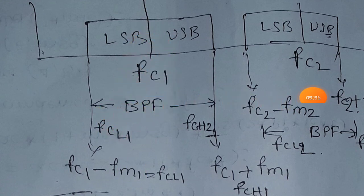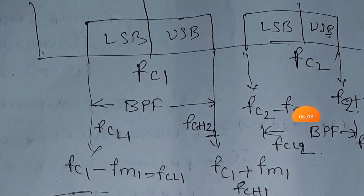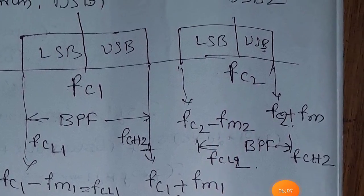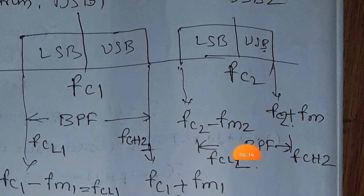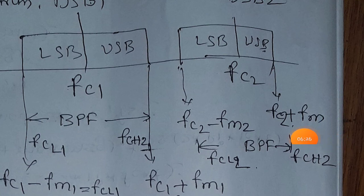Similarly, you can separate DSB-SC2 by passing through a bandpass filter having lower cutoff frequency FC2 minus FM2 and upper cutoff frequency FC2 plus FM2. You have to take another bandpass filter having these cutoff frequencies — lower cutoff frequency and upper cutoff frequency — to extract the second DSB-SC signal.